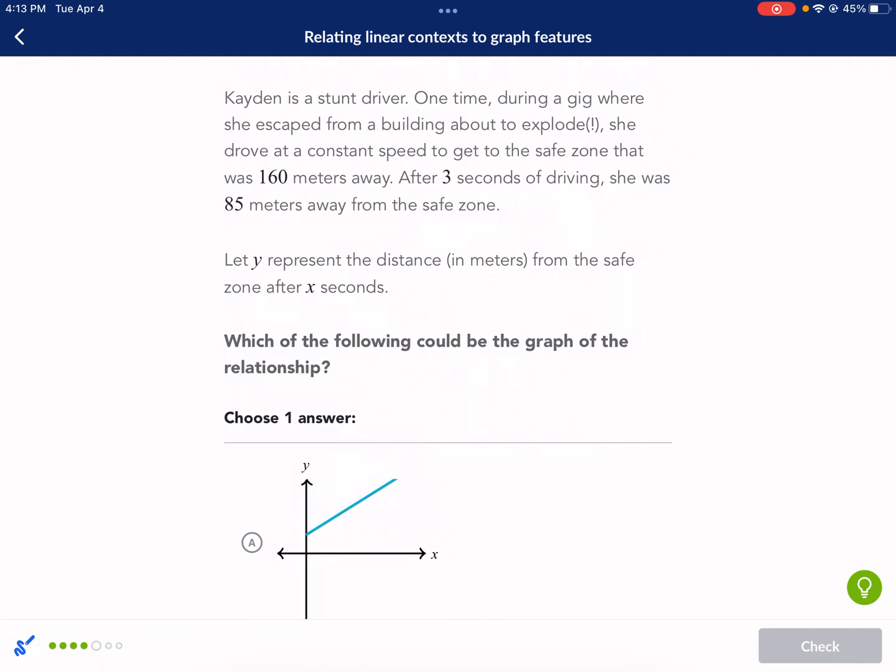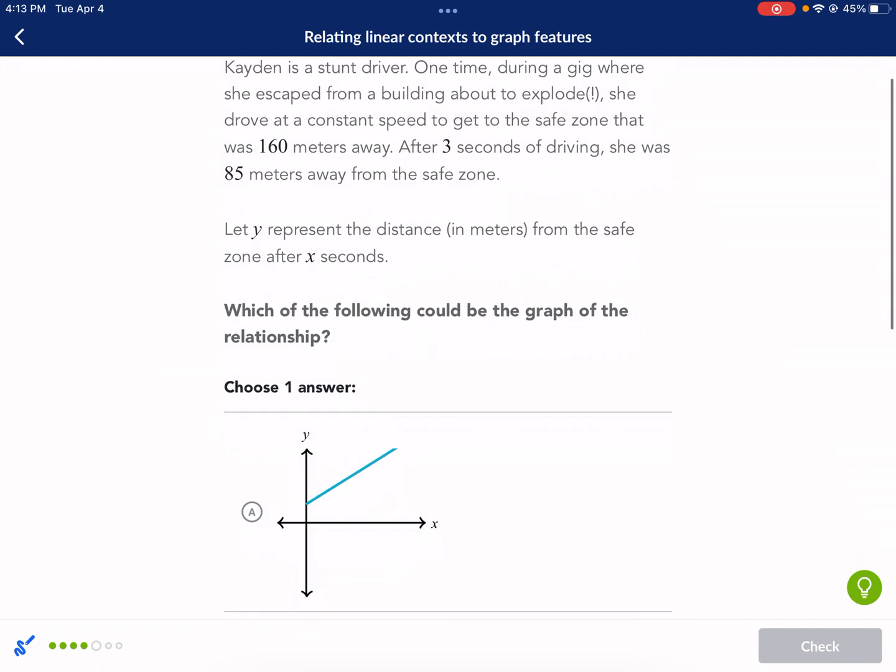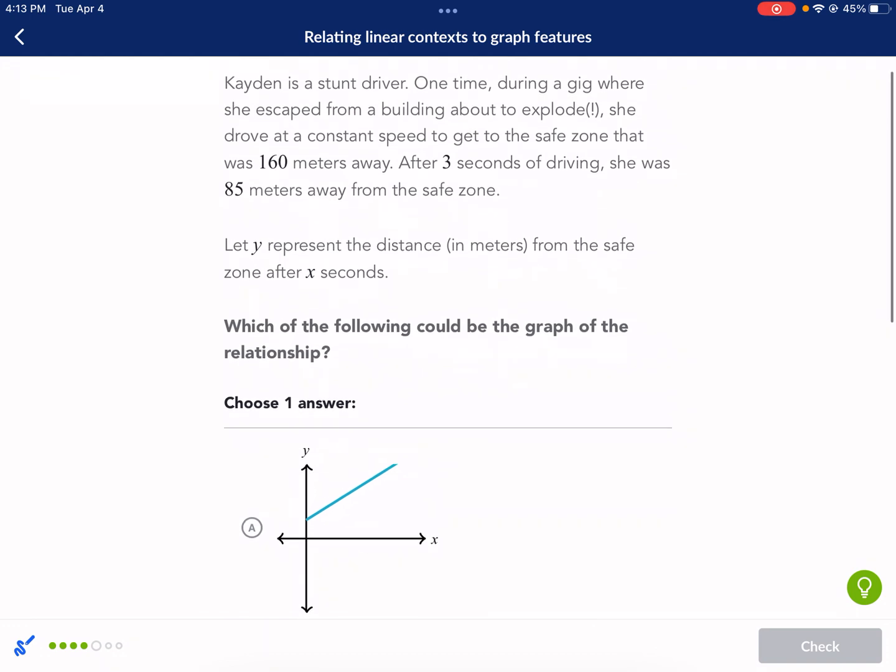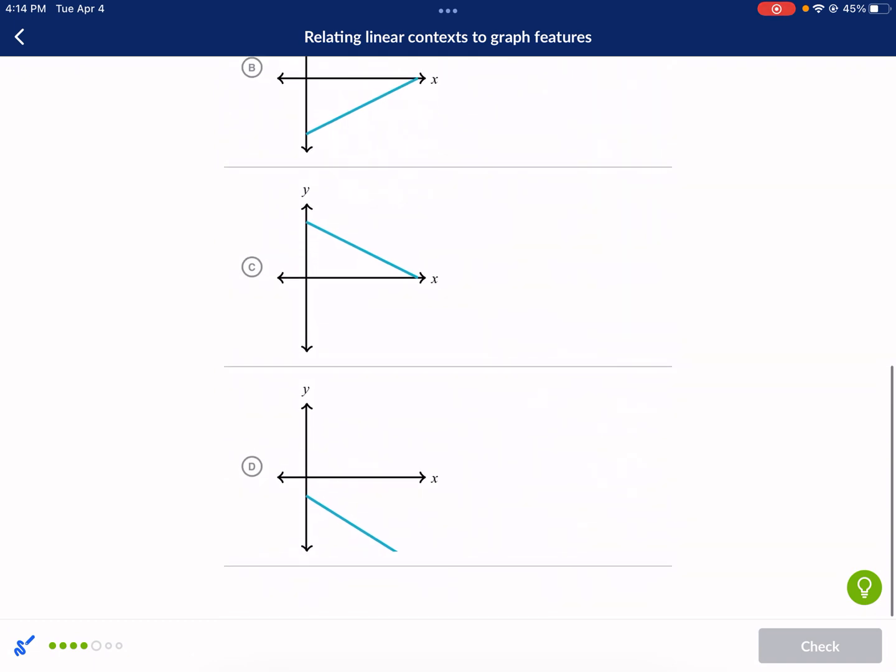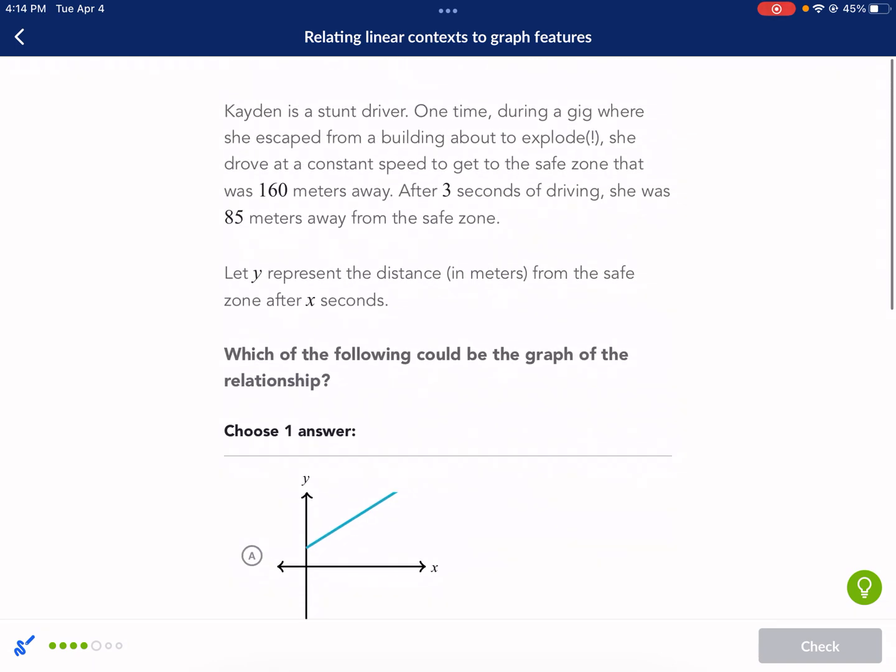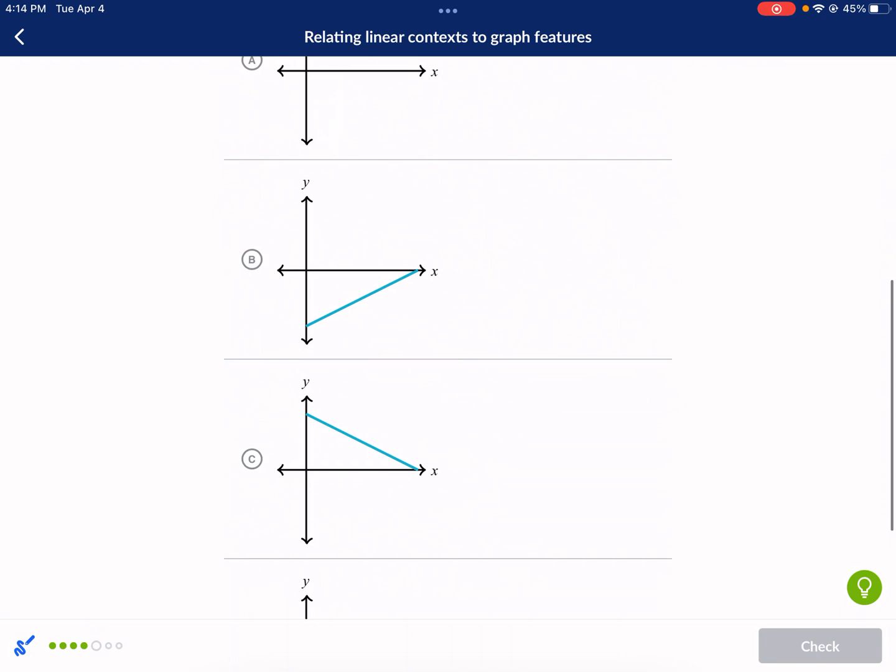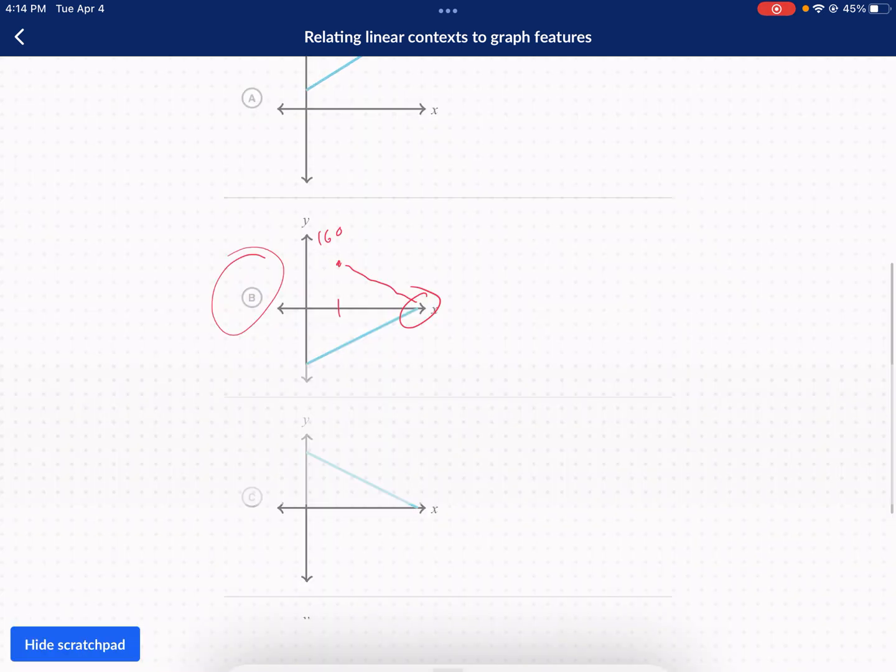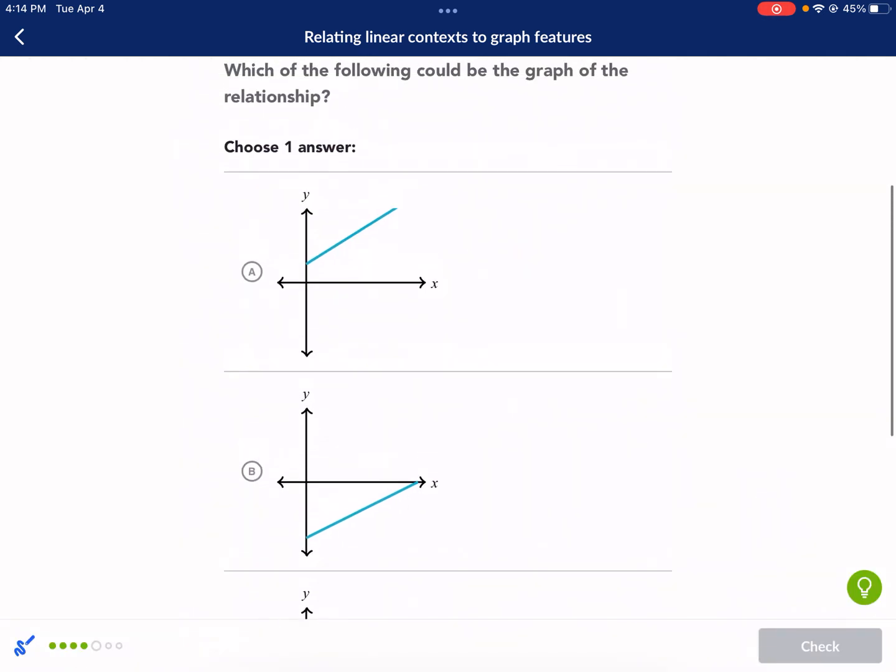So Y is the distance in meters from the safe zone. So we're getting closer to the safe zone. She drove at a constant speed of, that was 160 meters away. After three seconds of driving, she was 85 meters away from the safe zone. So we're trying to decide which one is a graph representing this. If the safe zone started off as 160 meters away and then we're getting closer, we're looking for a Y-intercept that's positive. So the only graph that really makes sense with this is C.